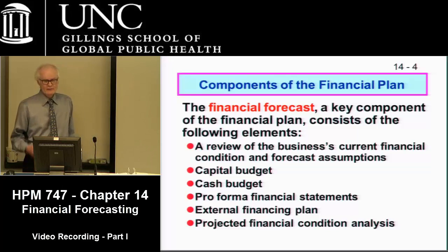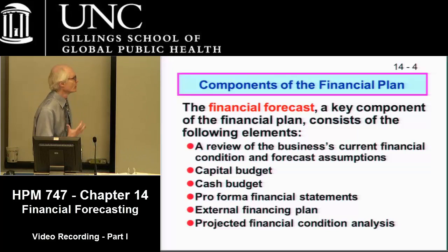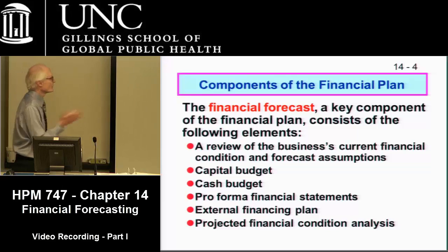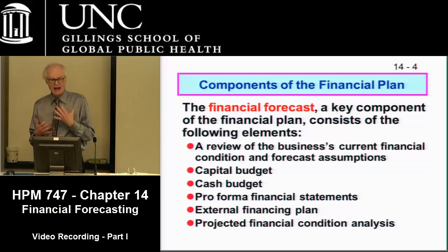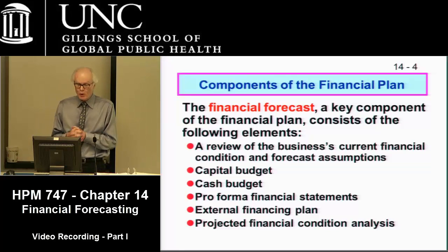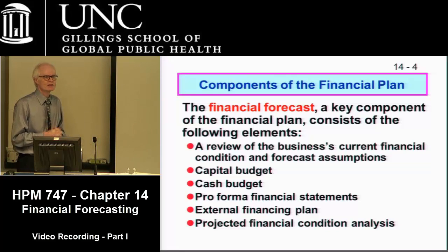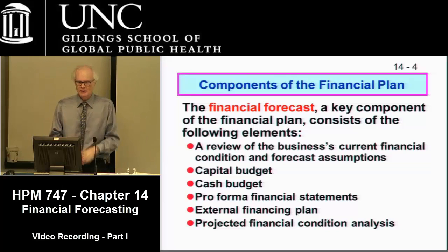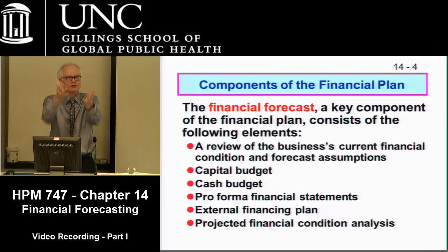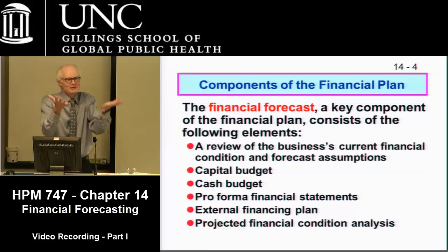The financial forecast essentially has the following kinds of things: you look at what's happening right now, you put together a capital budget, a cash budget, and pro forma financial statements. Pro forma is Latin — it essentially means for the future or for the foreseeable future.